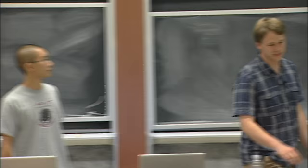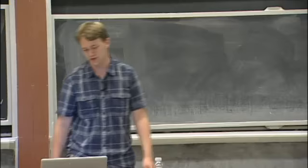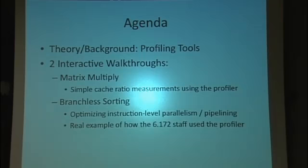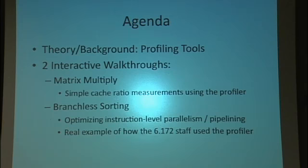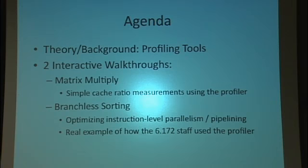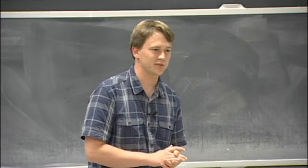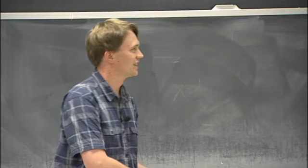All right, so we're going to talk about performance engineering and how to do that with profiling tools. First we'll talk about what profiling tools are, how you use them in general and the theory behind them. Then more importantly, we're going to do an interactive walkthrough of two examples. The first one is the matrix multiply from Project Zero, with cache ratio measurements and cycles per instruction measurements. Then we'll look at doing some of the bit hacks that Charles talked about in the second lecture, working on a branchless sorting algorithm.